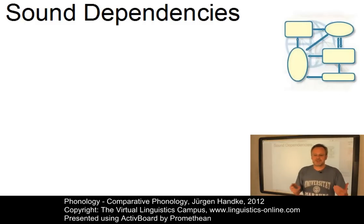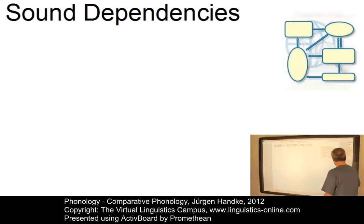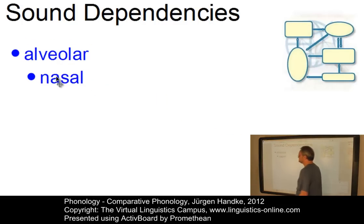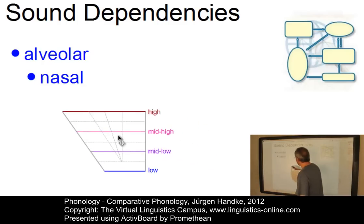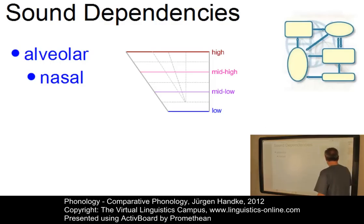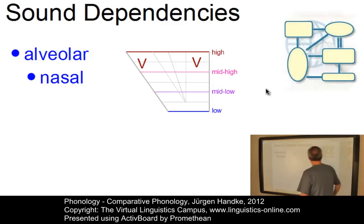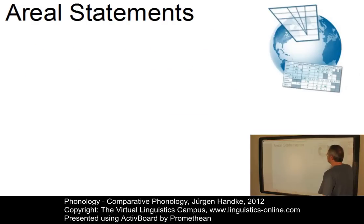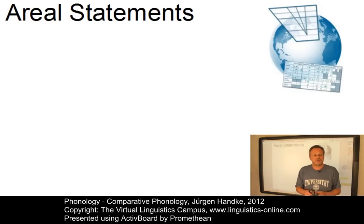These statements deal with questions of co-occurrences. For example, if a language has alveolar consonants, then it is likely to have nasal consonants. Or, looking at vowels: if a language has a certain front vowel, let's say a high front vowel, then the same language is likely to have a high back vowel. Beyond these sound dependencies and segmental statistics, we can make areal statements. Areal studies draw attention to the distribution of certain segment types in particular languages and regions.